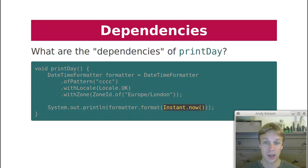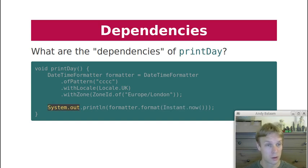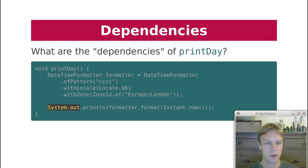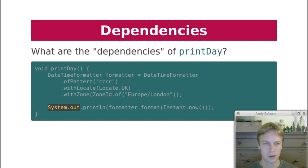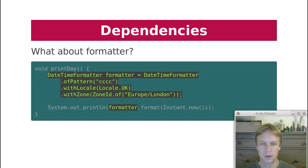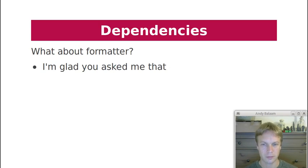One dependency is the time — instant.now just returns the time now. It's an instance of the Instant class which represents whatever the system clock says the time is. That's one dependency of this code. Also system.out — the fact that this program will print directly to the console could make it a bit awkward to work with if you change your mind about where you wanted to print later. So system.out is definitely a dependency. What about formatter — is formatter a dependency or not? It helps illustrate some of the ideas behind when dependency injection is useful.